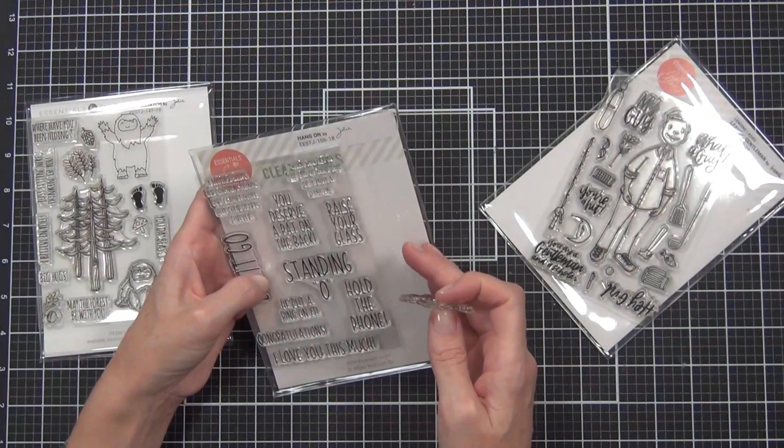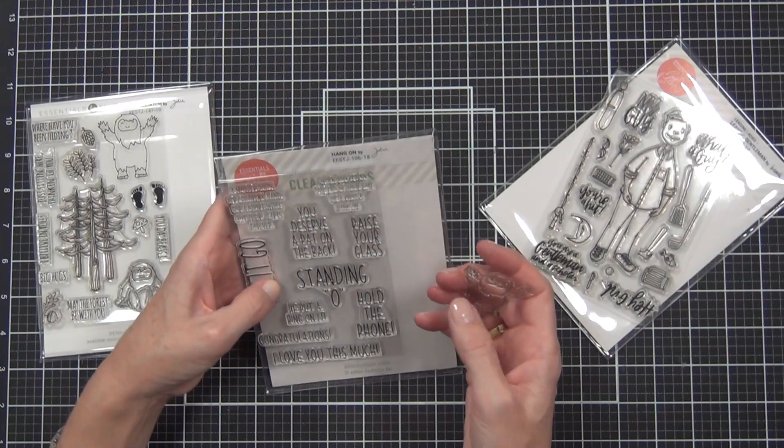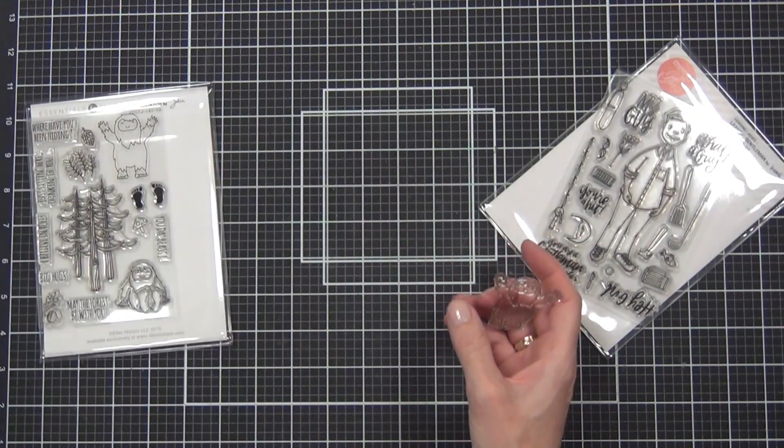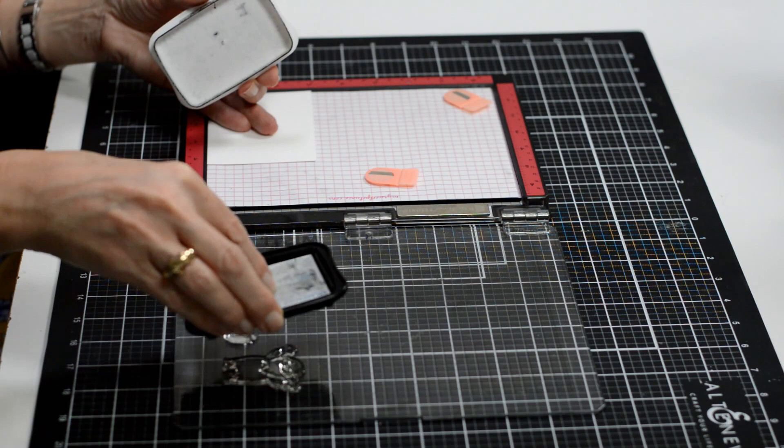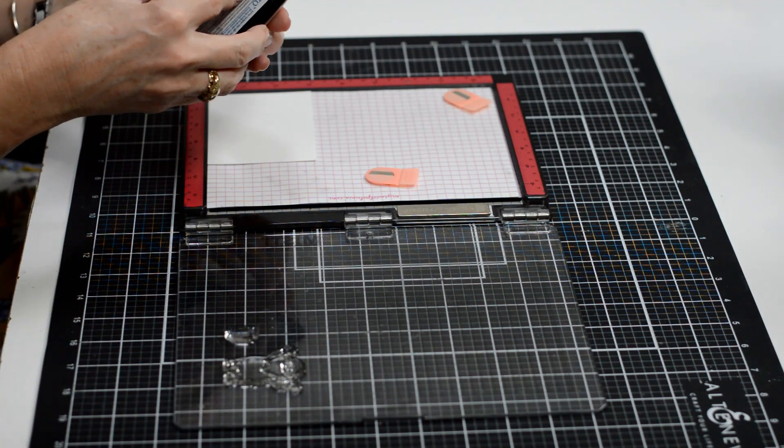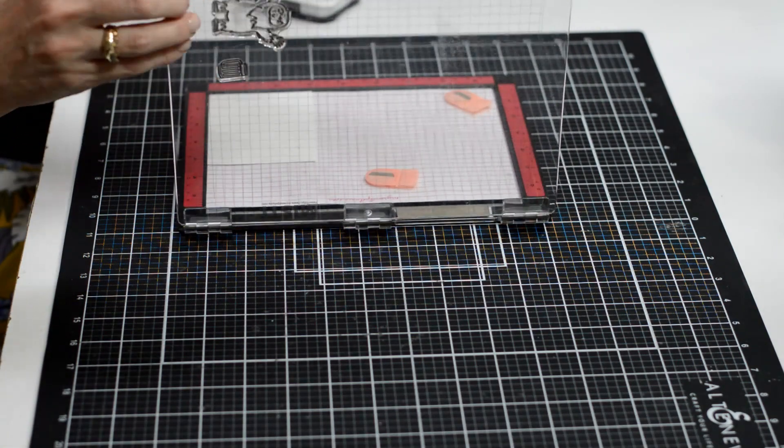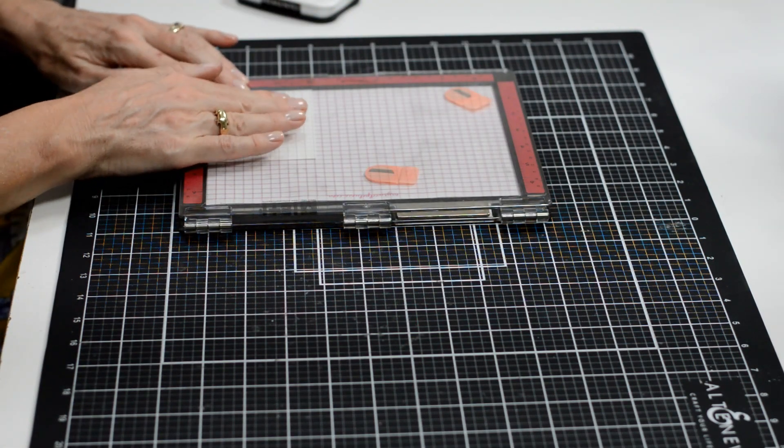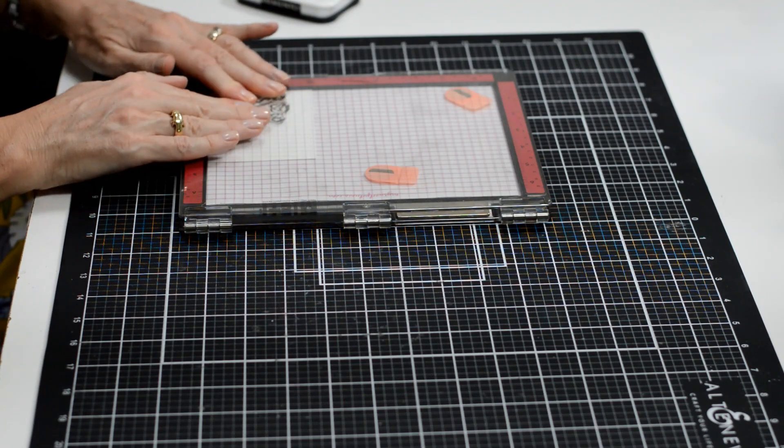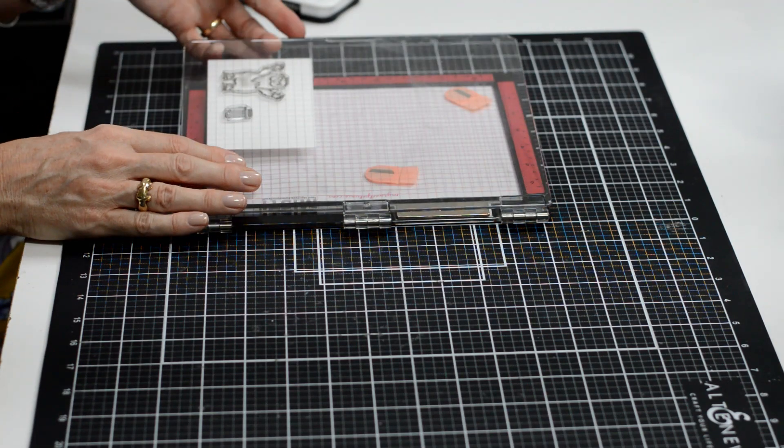This is the set that gave me the idea, it's called Hang On, and there's a sentiment in the set which says 'raise your glass' and I thought that'd be really fun to have a beer glass. Then I went and had a look through my stash and thought who can be holding the beer glass, and the Squatch I thought was perfect. So I thought I'd do some really quick Copic coloring today.